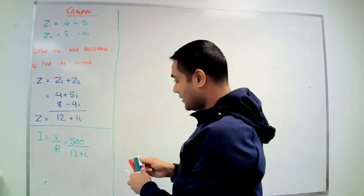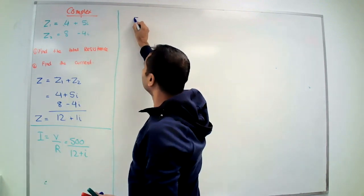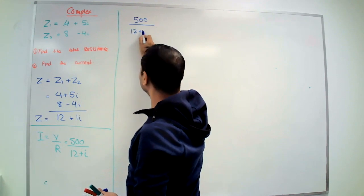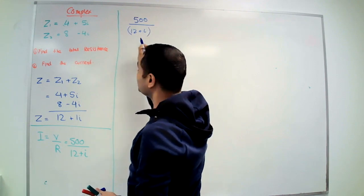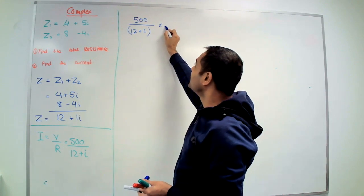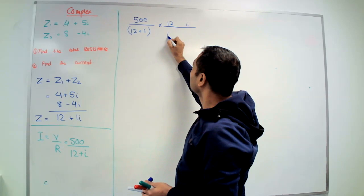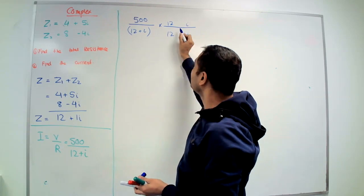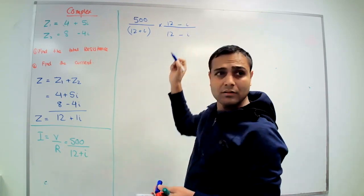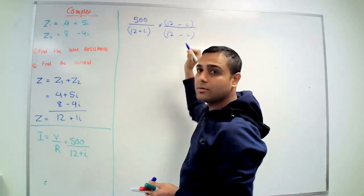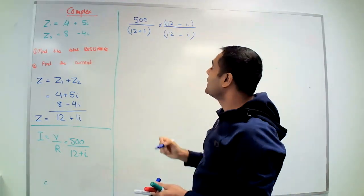Now I got 500 over 12 plus i. The first thing you need to do is put brackets. Then what you do is multiply and divide by the conjugate. What is the conjugate? You put minus, there you go.